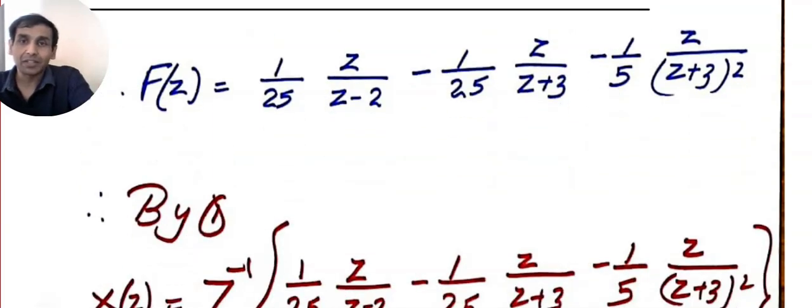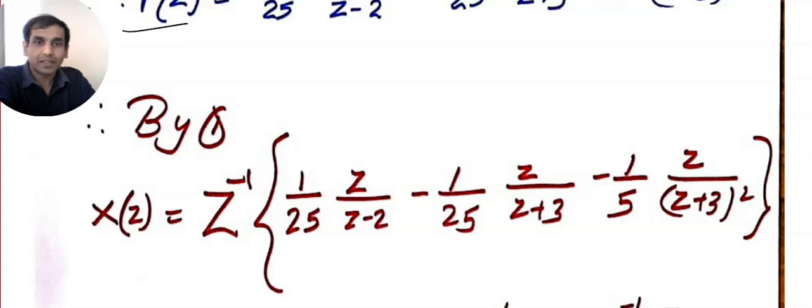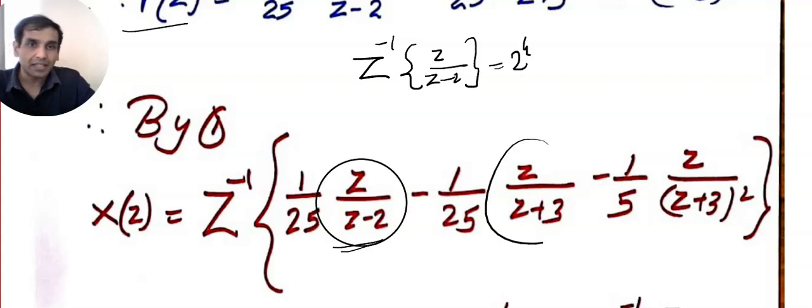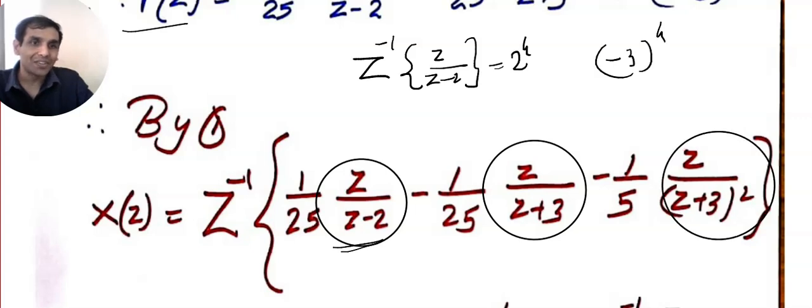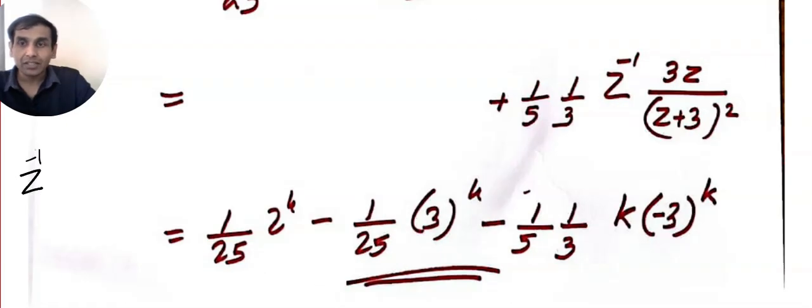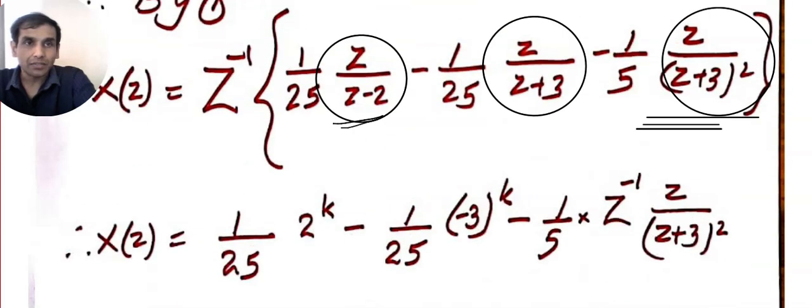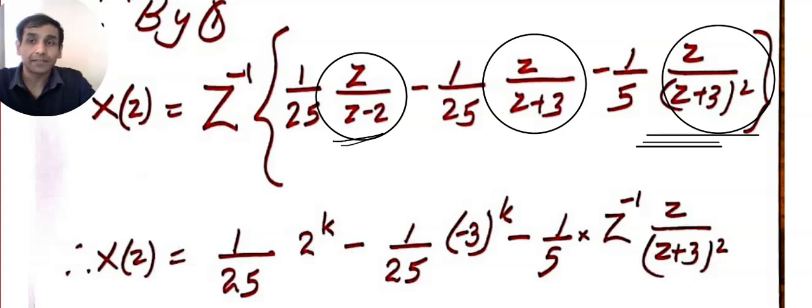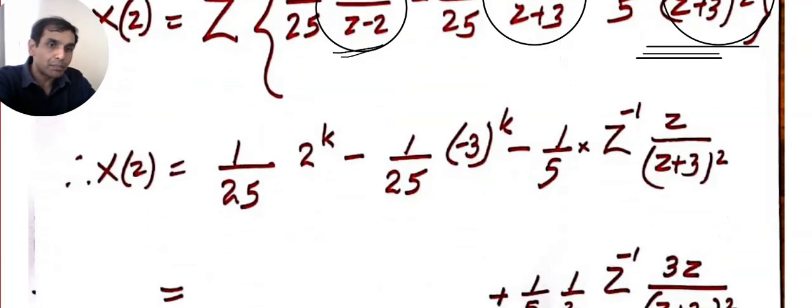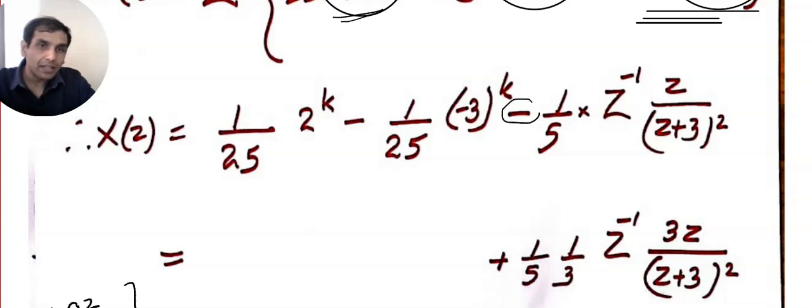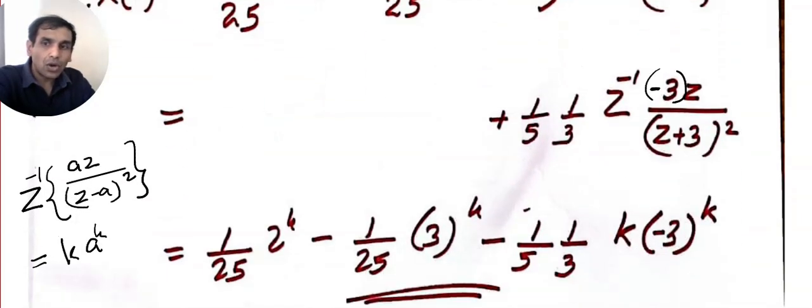And, that's it. Now, all you have to do is you have to take z inverse. Can you see? I am taking z inverse on both sides. What is the formula? What is z inverse of z by z minus 2? 2 to the power k. So, this will become 2 to the power k. This will become minus 3 to the power k. Oh, no. What will you do here? So, we need another formula. Z inverse of A z divided by z minus a the whole square. Please note it down. This will be k multiplied by a power k. So, can you see? We got z divided by z plus 3. So, what I did in the next step is I am multiplying numerator and denominator by minus 3. And, minus and minus will be plus. So, I have to multiply numerator and denominator by minus 3. Did you get the point? So, I kept minus 3 here. I kept minus outside. And, minus and minus became plus.